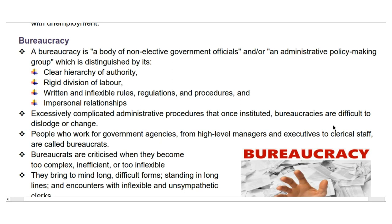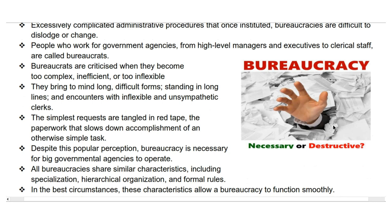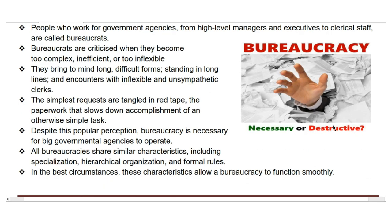Bureaucracy is a system of government or organization characterized by hierarchical structure, complex rules and procedures, and often associated with slow decision-making and administrative inefficiency. Once instituted, bureaucracies are difficult to dislodge or change. People who work for government agencies — from high-level managers and executives to clerical staff — are called bureaucrats. Bureaucrats are criticized when they become too complex, inefficient, or too inflexible. They bring to mind long, difficult forms, standing in long lines, and encounters with inflexible and unsympathetic clerks. The simplest requests are tangled in red tape — the paperwork that slows down accomplishment of an otherwise simple task. Despite this popular perception, bureaucracy is necessary for big governmental agencies to operate.